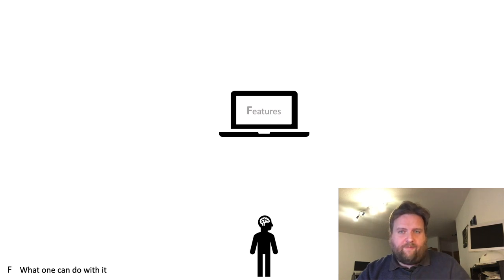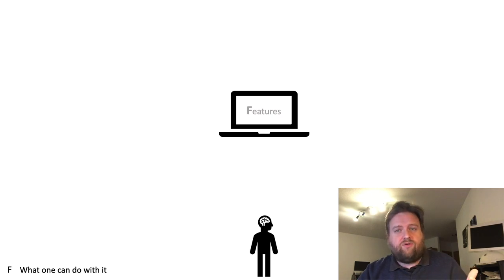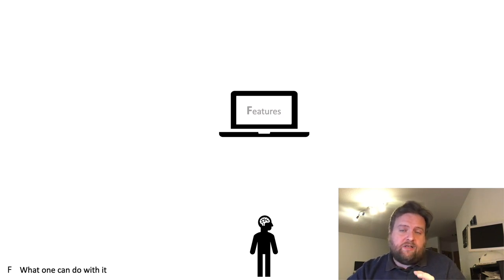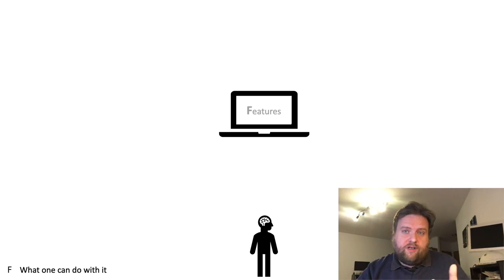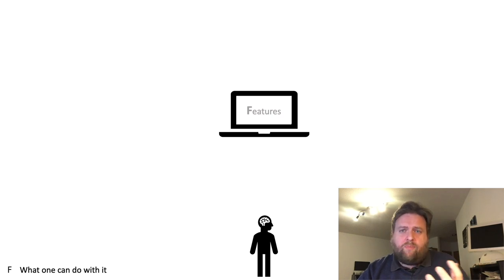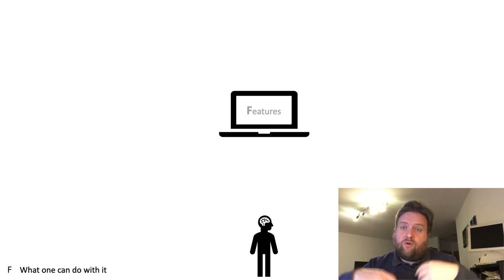I always use WhatsApp as an example, assuming that all of you know what WhatsApp is and have most likely used it or similar instant messaging tools. The most basic feature WhatsApp has is the ability to send text back and forth from one person to another, or from one person to a group of people. Not all features are intended by the creators of an artifact — sometimes one calls those proper features. A proper feature of WhatsApp would be sending a text to a friend.